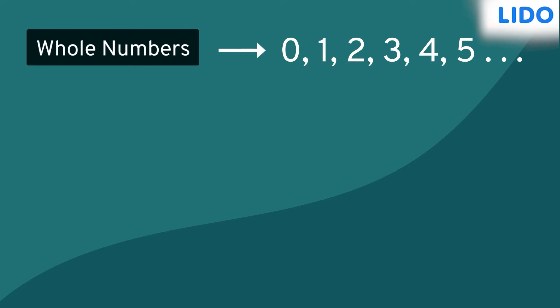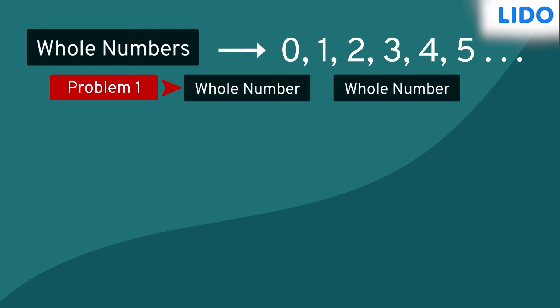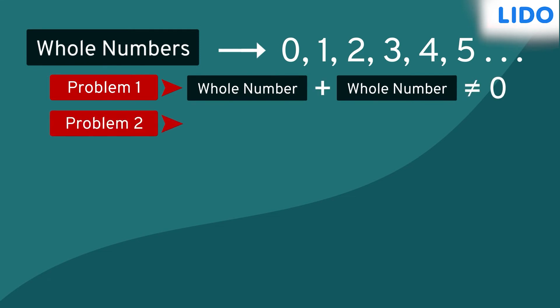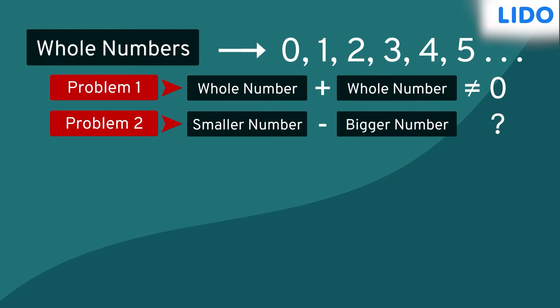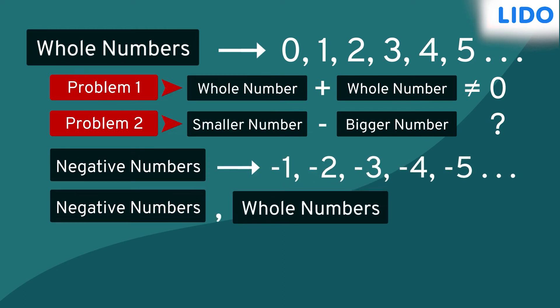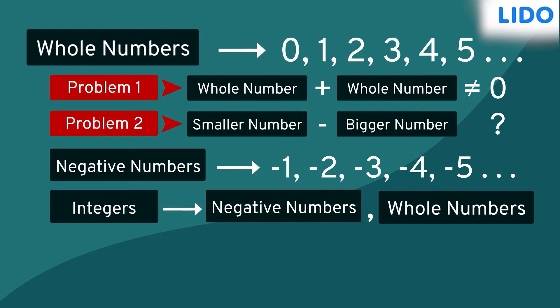With whole numbers, we faced two new problems. First, we realized that no two numbers when added give 0. Then we realized we cannot subtract a bigger number from a smaller number. To solve this, negative numbers were introduced, and together with whole numbers, they were named integers. We began to use these negative numbers to represent loss or debt.